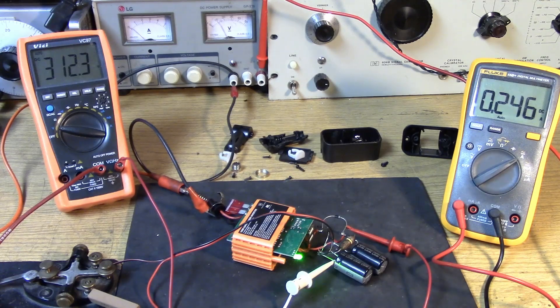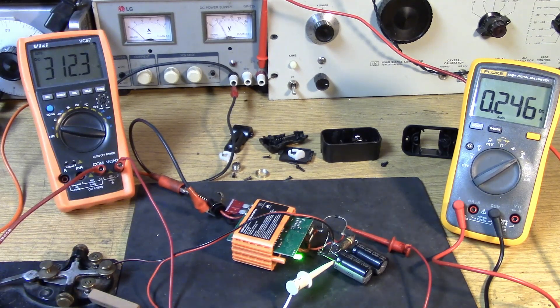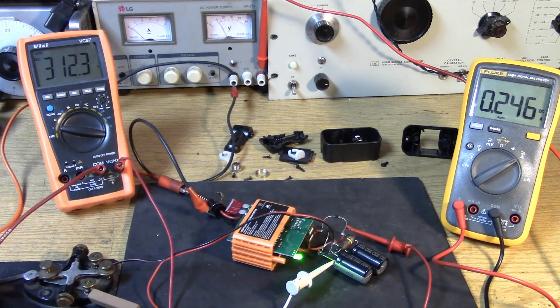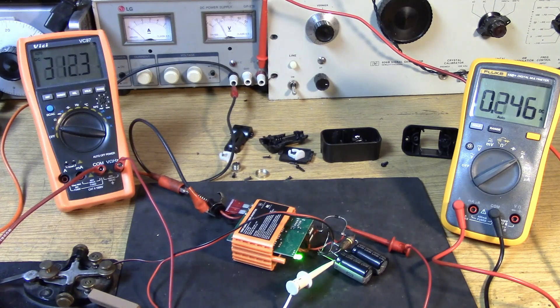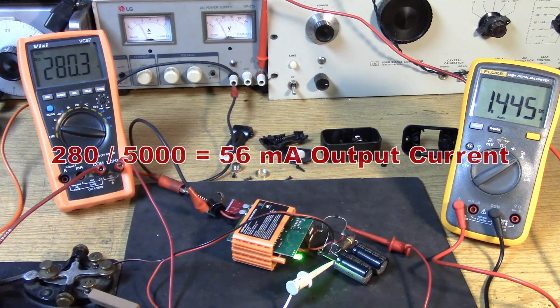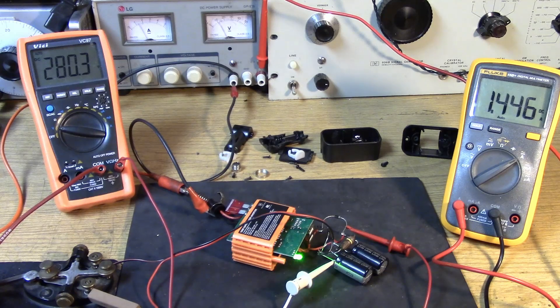Okay. We still have our 246 milliamp quiescent current. And now, we have our output voltage of 312 volts. Now, let's go key down. Remember, we have the 13 volt input. 280 at 1.445 amps. 280 at 1.44.